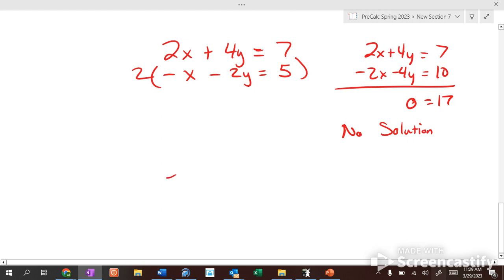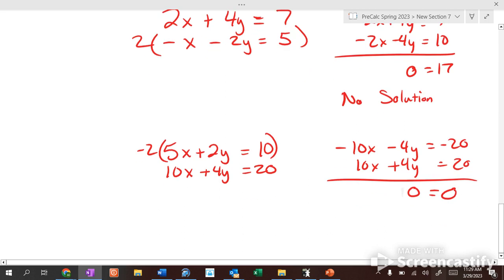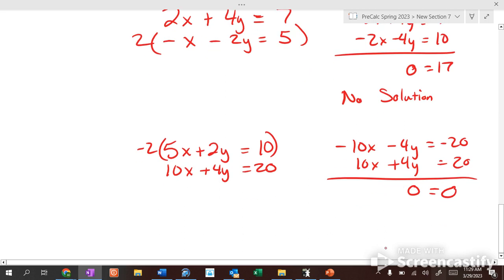Let's take a similar example. What do I do here? I multiply the top by negative 2, so I get negative 10x minus 4y equals negative 20, and 10x plus 4y equals 20. If I add, I get 0 equals 0. What's the solution for this one? It's not no solution. It's infinitely many solutions.